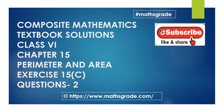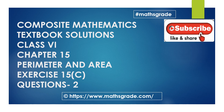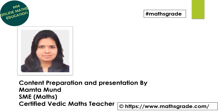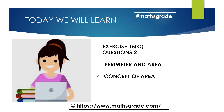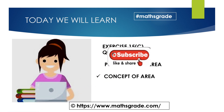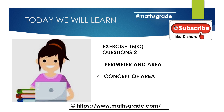Hello everyone, this is Mamta Munt. Today we will learn and solve questions 1 to 24 of exercise 15c, chapter 15. The chapter name is Perimeter and Area, from the Class 6 Composite Mathematics textbook. The topic is the concept of area and perimeter. Let's solve some questions.